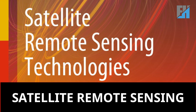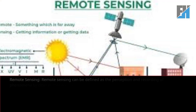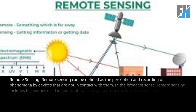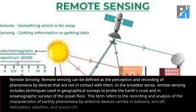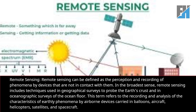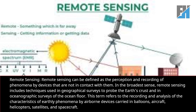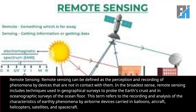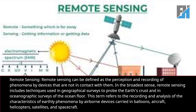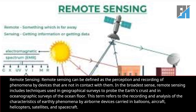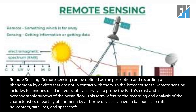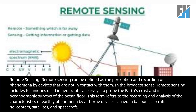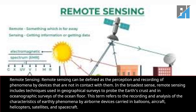In today's topic we would be discussing satellite remote sensing. Remote sensing can be defined as the perception and recording of phenomena by devices that are not in contact with them. In the broadest sense, remote sensing includes techniques used in geographical surveys to probe the earth's crust and in oceanographic surveys of the ocean floor. This term refers to the recording and analysis of the characteristics of earthly phenomena by airborne devices.